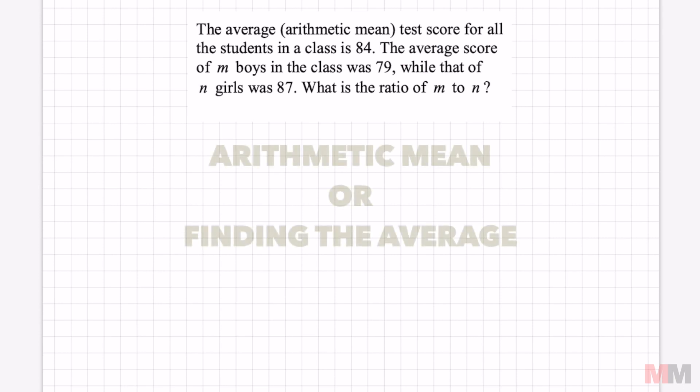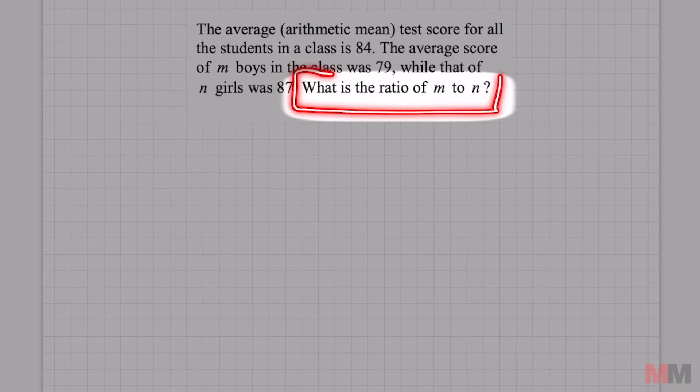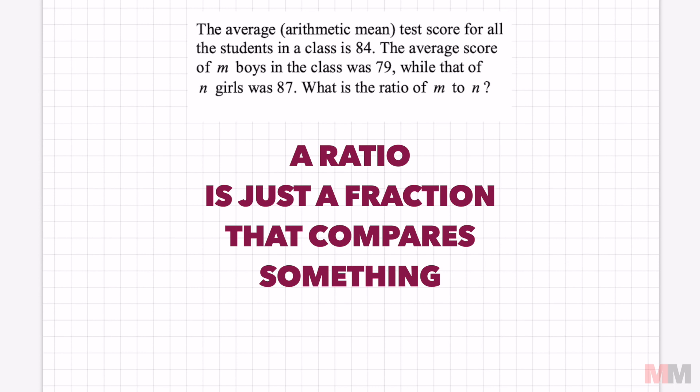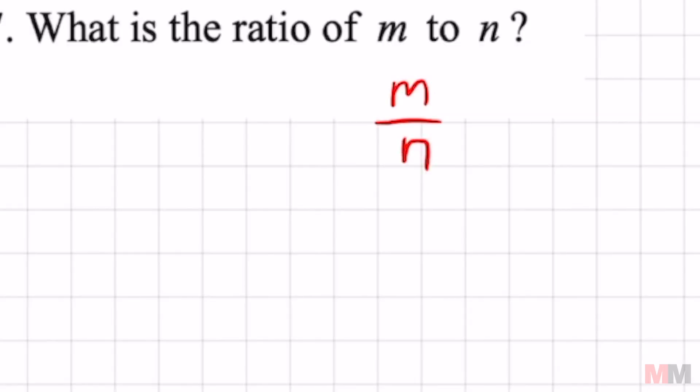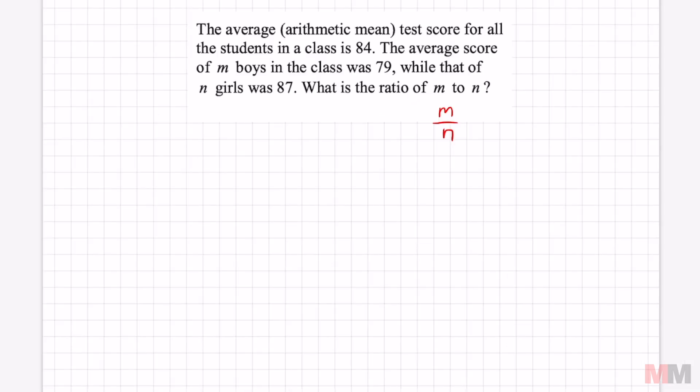Here's a really tough question on the SAT about arithmetic mean, and we're going to start this backwards. Anytime I get a word problem on the SAT, I like to look at the question right away. That way I know what I'm trying to look for. It says, what is the ratio of m to n? A ratio is just a fraction. We're trying to look for the fraction of m over n. That's my main goal. At least I know what to look for now.